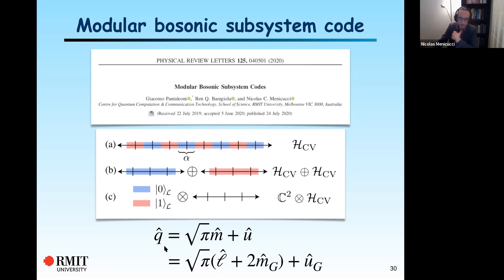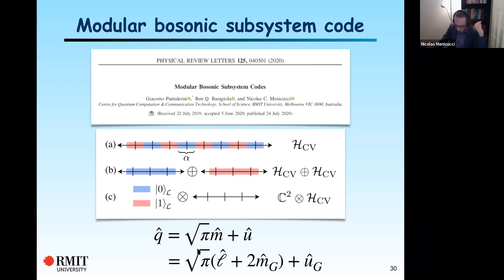At the operator level, we decompose the position operator — which is (a + a†)/√2 — and that's going to be root-pi times some integer plus a remainder modulo root-pi. This is one of Aharonov's modular variables. We further decompose this integer M: we're dividing into bins — which bin am I in, and where am I within the bin. Then we take the bin number, take its parity, and if the bin is even we declare that the qubit is logical zero; if it's odd, we say it's logical one. We take the remainder and stick that into what we call the gauge mode.